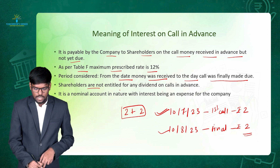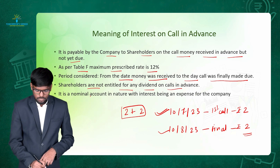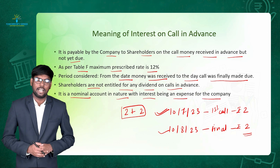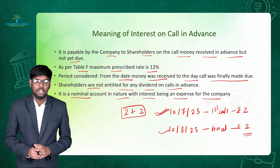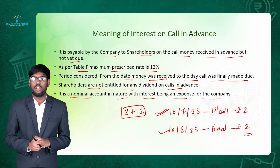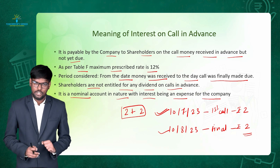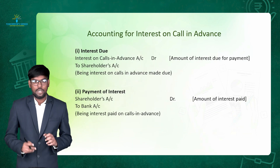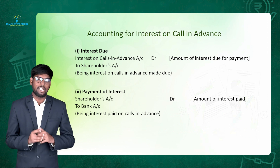Shareholders are not entitled to any dividend on call in advance. Interest on call in advance is a nominal account in nature, with interest being an expense for the company. When doing accounting for this, you have to consider interest on call in advance as an expense, and accordingly pass the journal entries. Interest on call in advance is an expense from the company's point of view.